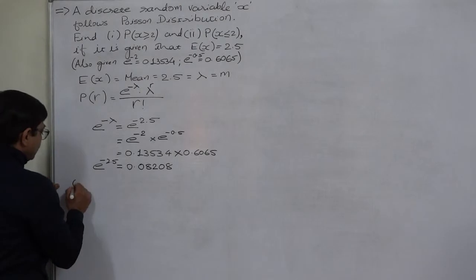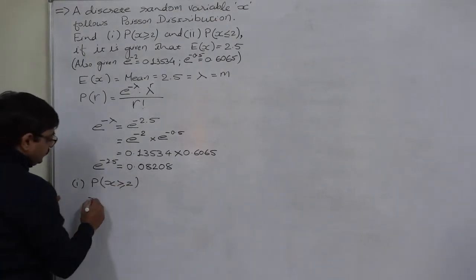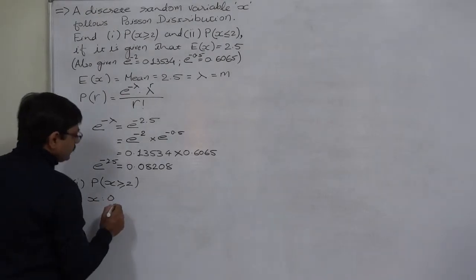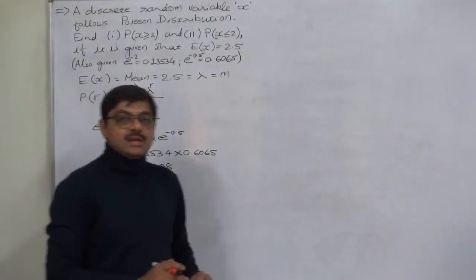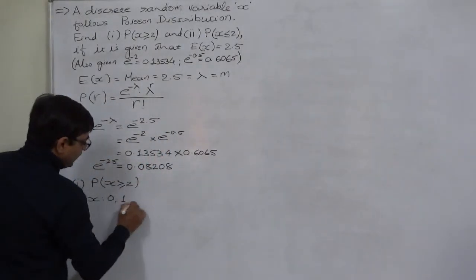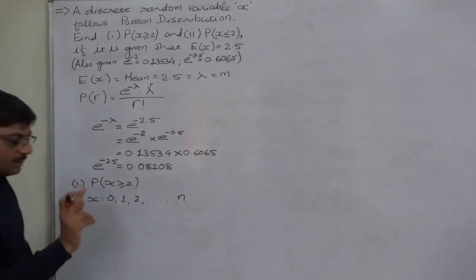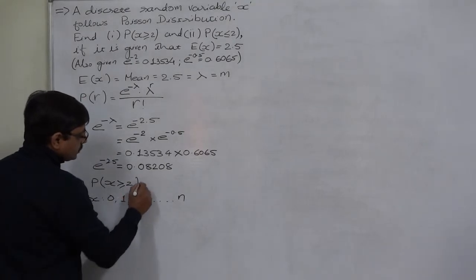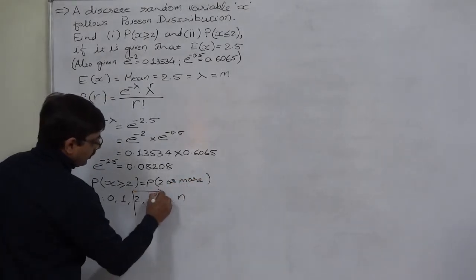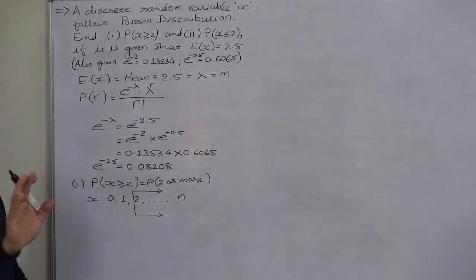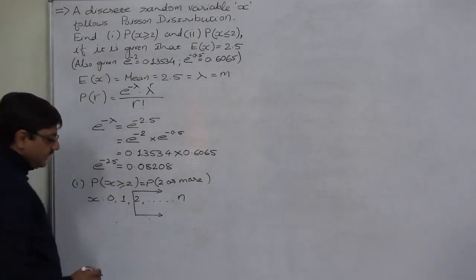Now we can make calculations. First we want P(X ≥ 2). In Poisson law, X can take values from 0 to N, where N can be indefinitely large — 0, 1, 2, and so on up to N. We are interested in values greater than or equal to 2, which means we are not interested in the values 0 and 1.